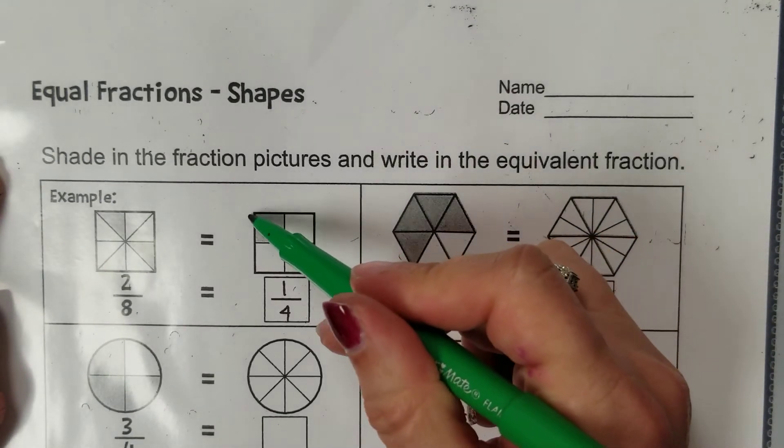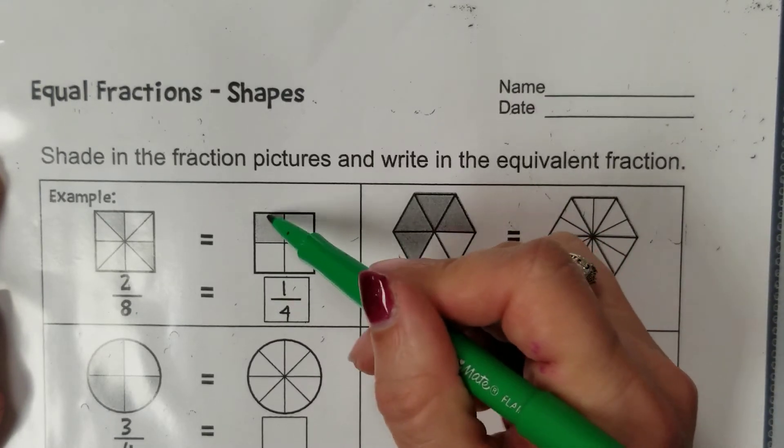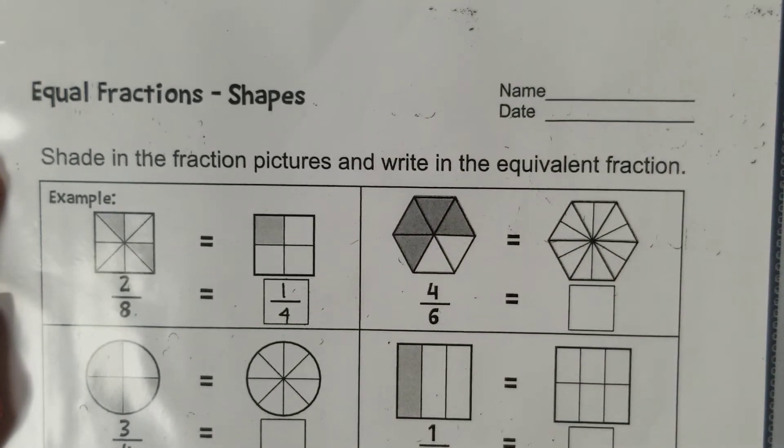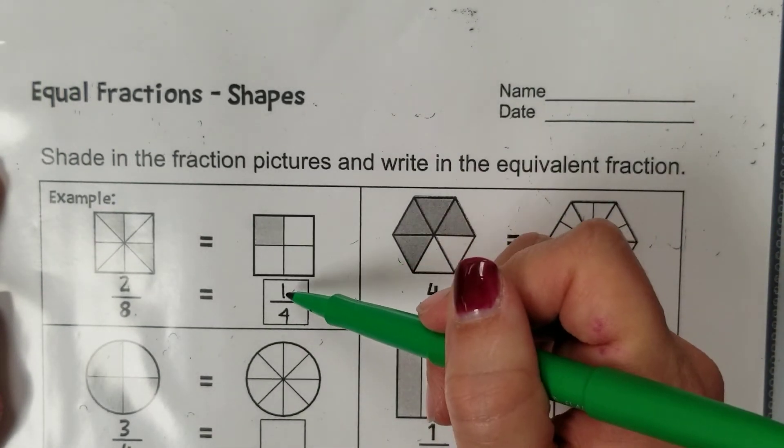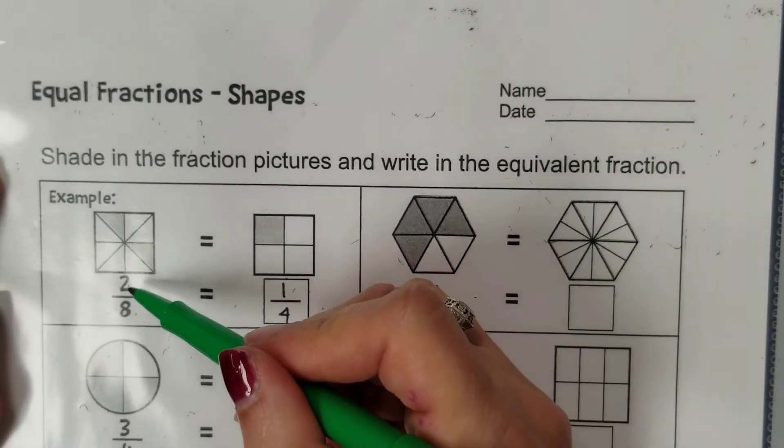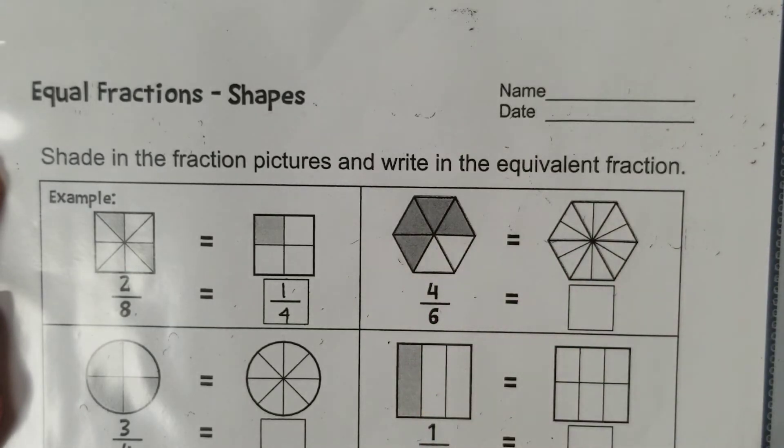The second fraction is again one whole square but this square is broken into four parts, and so that's why there's a four down in that denominator. One part is shaded and so that's why we have a one here in our numerator. So two eighths is equivalent or equal to one fourth.